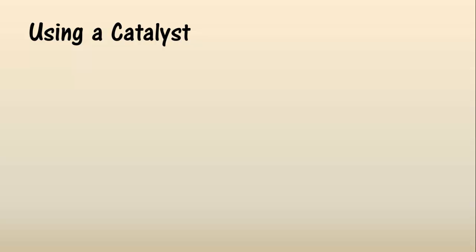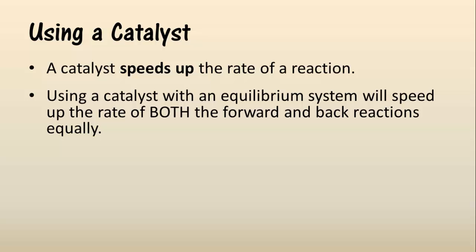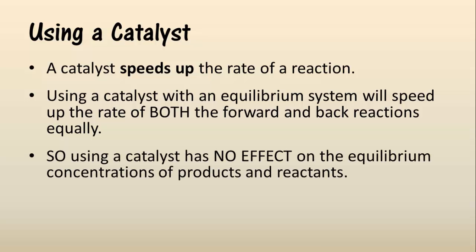Right — the last effect finally. This is the effect of using a catalyst on an equilibrium system. What we do know is that a catalyst speeds up the rate of a reaction. Therefore, using a catalyst with an equilibrium system will speed up the rate of both the forward and the back reactions equally. So using a catalyst will have no effect on the equilibrium concentrations of products and reactants. But using a catalyst will speed up the time taken to reach equilibrium, and therefore ultimately save on the overall costs of an industrial process. But the catalyst has no effect on the equilibrium concentrations.